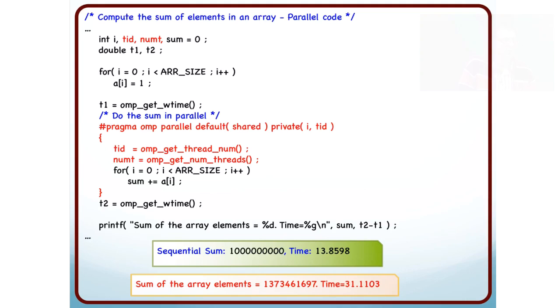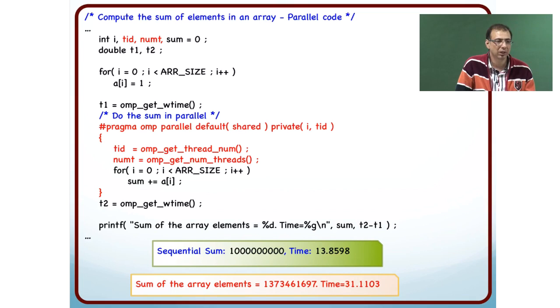Every time a thread updates sum, whatever the protocol be, whether it be the invalidate or the update protocol for cache coherency, it has overheads. So, that cache coherency overhead is causing the increase in time.